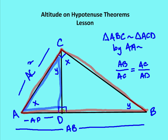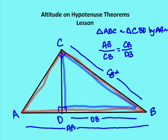So the first formula is: AC squared is equal to AB times AD. Now we compare the medium-sized triangle to the larger triangle. Triangle ABC is similar to CBD by AA. So AB over CB (hypotenuse of the larger over hypotenuse of the medium) equals CB over DB (leg of the larger over the corresponding leg of the medium-sized triangle).